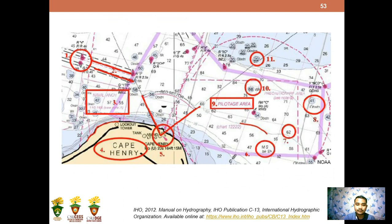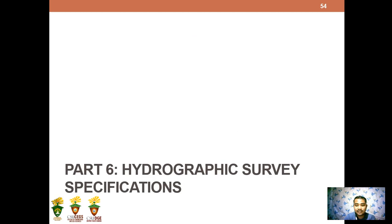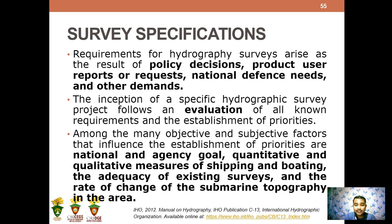For Part 6, the hydrographic survey specification: requirements for hydrographic surveys arise as a result of policy definitions, decisions, product user reports or requests, national defense needs, and other demands — similar to terrestrial surveys which have survey specifications and orders of accuracy. The inception of a specific hydrographic survey project follows an evaluation of all known requirements and the establishment of priorities, influenced by national and agency goals, quantitative and qualitative measures of shipping and boating, the adequacy of existing surveys, and the rate of change in the submarine topography.